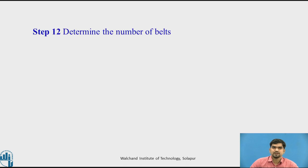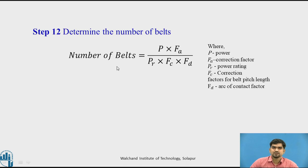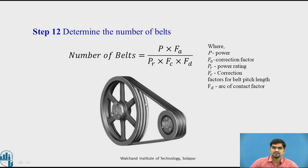Step 12: Determine the number of belts using the equation with all previously calculated values — PD, Pr, Fc, and Fd. Substituting these values gives the number of belts N. For example, if N equals 3, we use 3 belts; if N equals 2, we select 2 belts.